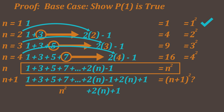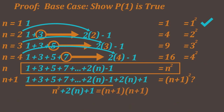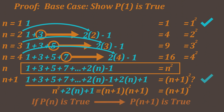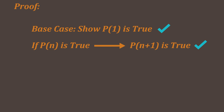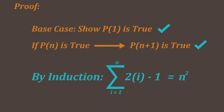We can then factor this to n plus 1 times n plus 1, which simplifies down to n plus 1 squared. Therefore, if our statement is true at n, that implies that our statement is true at n plus 1 as well. Thus, by induction, the statement — the sum of the first n odd numbers is equal to n squared — is true.